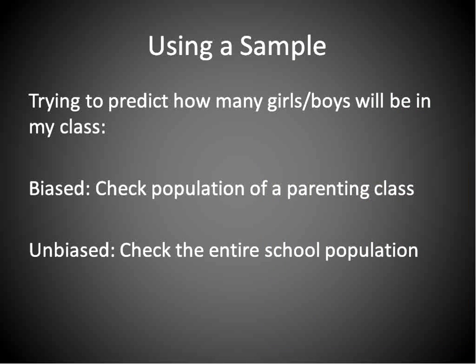Here's an example of biased and unbiased. If I'm trying to predict how many girls or boys will be in my math class, a biased sample would be to check the population of boys and girls in a parenting class. More likely there's going to be more females in a parenting class — when I went to high school there were two guys and the rest were girls. An unbiased way would be to check the entire school population and get more of a general feel of the male to female ratio, which would help predict how many students would be in a math class.